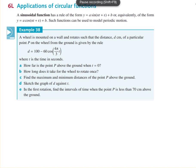Applications of circular functions. A wheel is mounted on a wall and rotates such that the distance of a particular point on the wheel from the ground at any point is given by the rule d equals 100 minus 60 cos 4π over 3t where t is the time in seconds. Now in these application questions you're going to get a lot of questions that are several bits. The easiest thing by far is to draw a graph to start with.